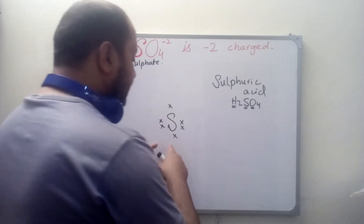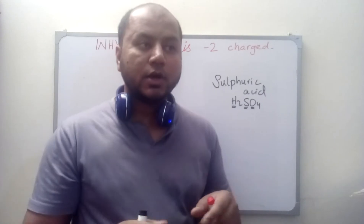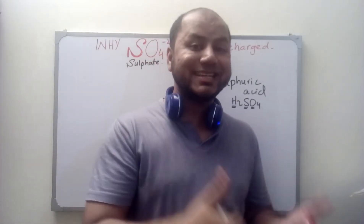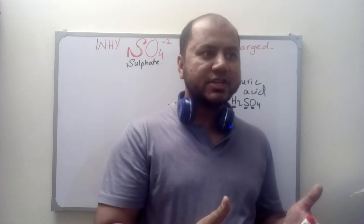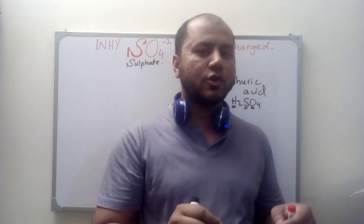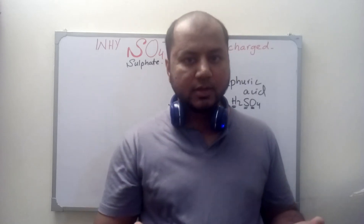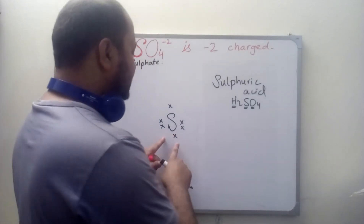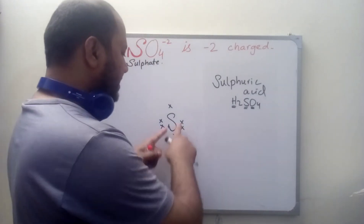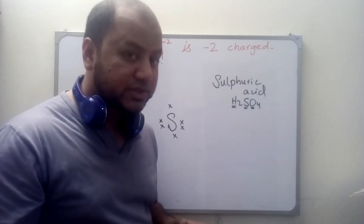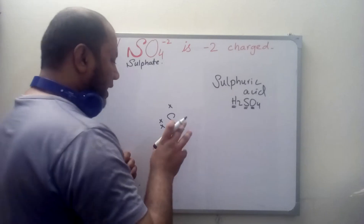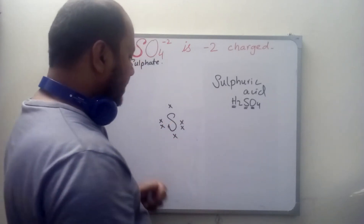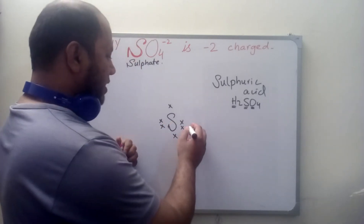Sulfur is present in the sixth group — or sixteenth group — of the periodic table, and contains six electrons in the valence shell. So from this, we know that sulfur has six electrons in its outer shell.